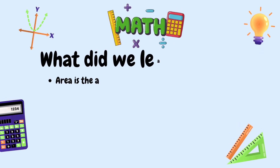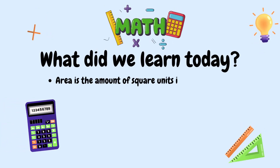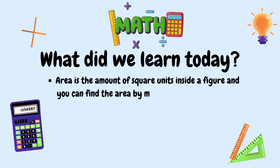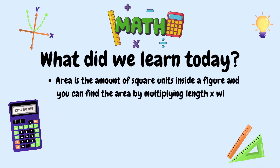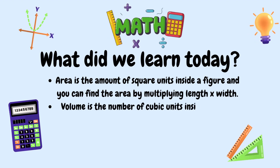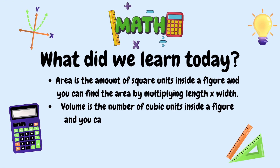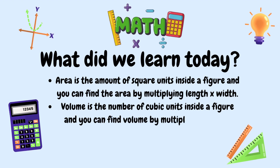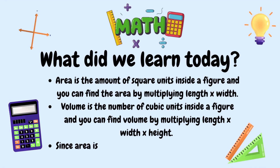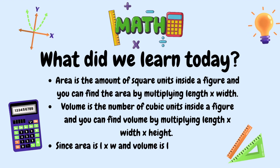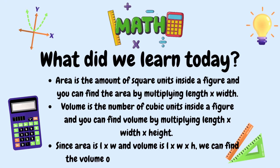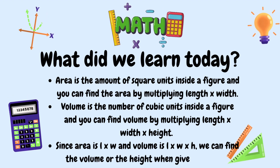Okay mathematicians, what did we learn today? We learned that area is the amount of squared units inside a figure, and you can find the area by multiplying length times width. Volume is the number of cubic units inside a figure, and you can find volume by multiplying length times width times height. Since area is length times width, and volume is length times width times height, we can find volume or the height when given the area.